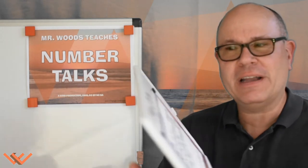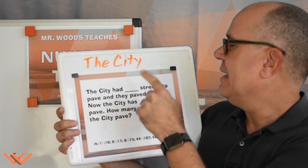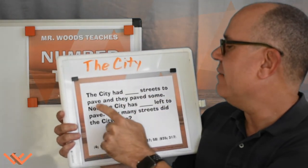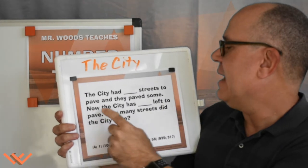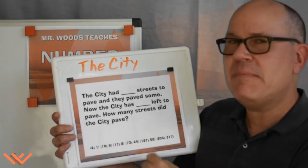Hey, today we're talking about the city. The city had ten streets to pave, and they paved some. Now the city has six left to pave. How many streets did the city pave?